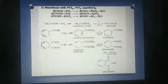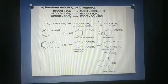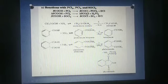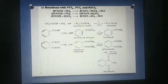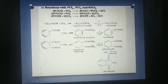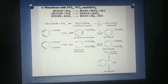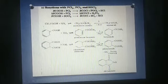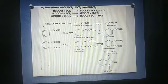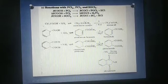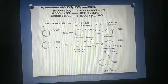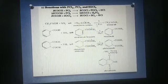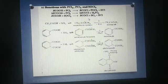Reaction with PCl5, PCl3, SOCl2. Acid reacts with PCl5 to form RCOCl plus POCl3 plus HCl. With PCl3, it forms COCl and H3PO3 and with SOCl2, it gives SO2 and HCl. Formation of acyl chlorides is more suitable with SOCl2 because the byproducts are gaseous. They leave the system so that we get the acyl chlorides in pure form.